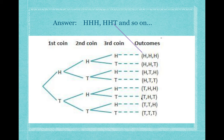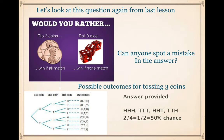Last lesson we looked at the question: would you rather flip three coins or roll three dice? Now let's look at this question again — can anyone spot a mistake in the answer? The answer given was: you can have three heads, three tails, heads-heads-tails, tails-tails-heads. Can anyone think about a possible mistake? I might have written this mistake on purpose just to see if you can understand. Can you see any difference? Both of these show possible outcomes for tossing three coins. Do you think it's the correct answer or can you see a mistake?